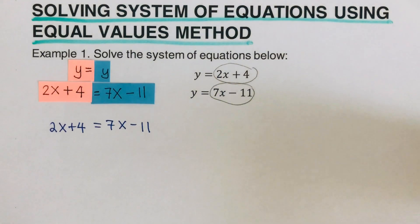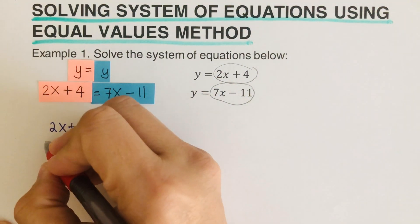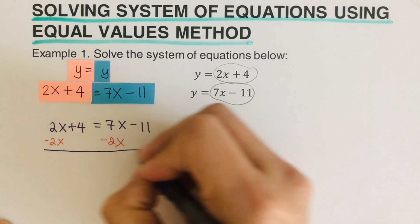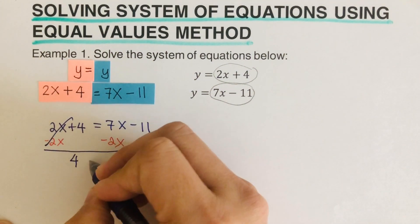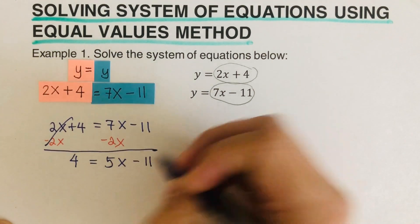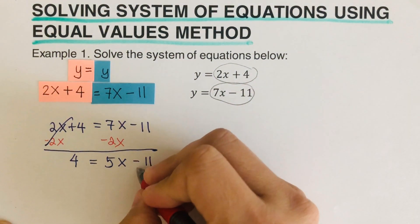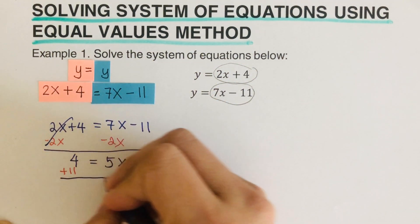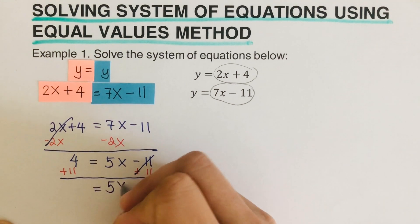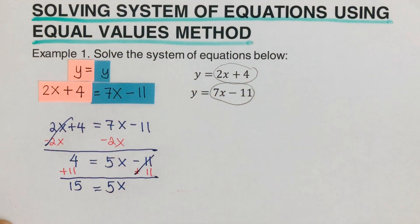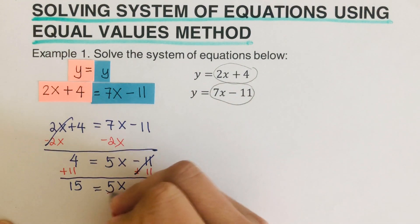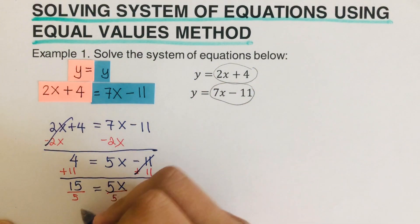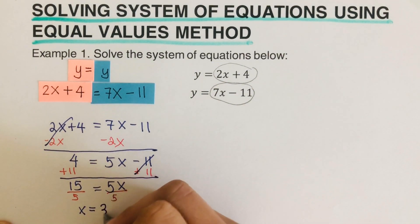To solve for x, we subtract 2x from both sides, so we are left with 4 equals 5x minus 11. Then we add 11 to both sides — plus 11 on both sides — so we cross the 11 out and are left with 5x equals 15. Since we want to solve for x, we divide both sides by 5, and we get x equals 3.